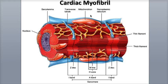Very little ATP is generated in cardiac muscle fibers by anaerobic respiration. The oxygen required for aerobic respiration diffuses out of the coronary circulation and into the cardiac muscle fibers, where it is stored by the myoglobin and released when needed.